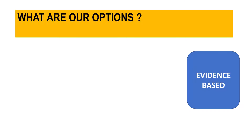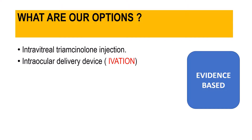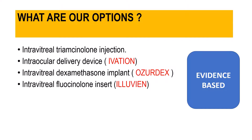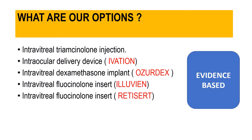After knowing the indications, contraindications, and mechanism of action, what are our steroid options for use in diabetic macular edema? We have intravitreal triamcinolone injection; an intraocular delivery device called iVashin which delivers triamcinolone into the intravitreal cavity; intravitreal dexamethasone implant called Ozurdex; intravitreal fluocinolone acetonide insert called Iluvien; and one more fluocinolone insert called Retisert. The question is how many of these are approved by the FDA for use in diabetic macular edema.